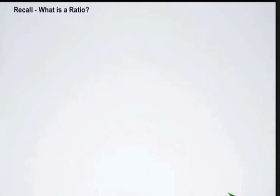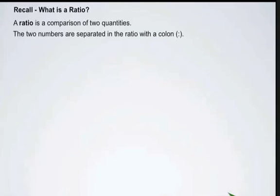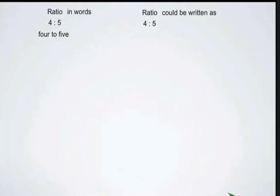Here we're going to review what a ratio is. Remember that a ratio is a comparison of two quantities. The numbers are separated in the ratio with a colon. So a ratio such as this would be verbally described as a ratio of 4 to 5, written as 4 colon 5. Another way we can write this ratio is in fraction format as 4 over 5.